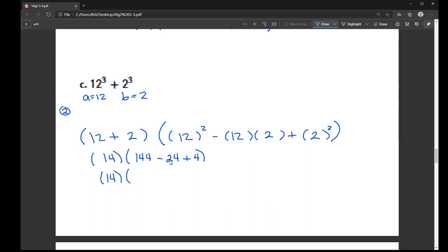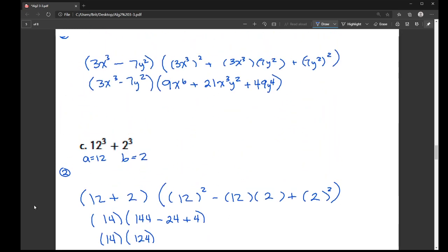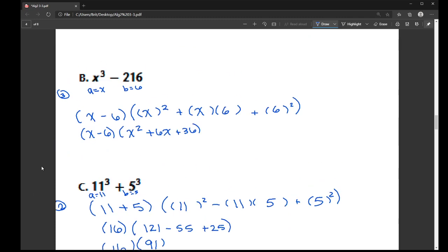144 minus 24 is 120. Plus 4 is 124. And then if you multiply those two together, you get 1,736. Which is, again, weird, not something I'd do. But the ones with variables are things that we'd see fairly regularly.